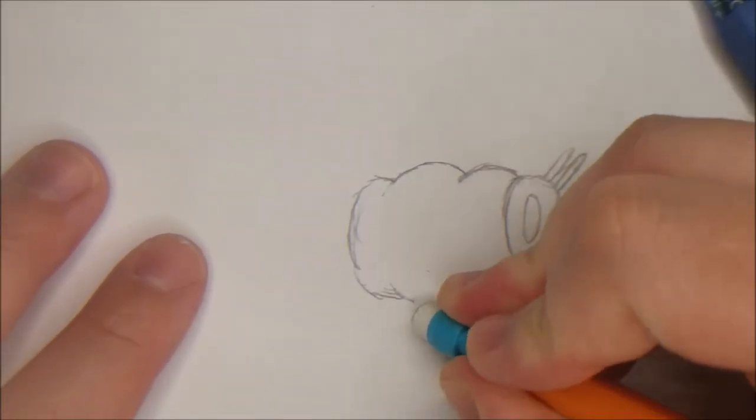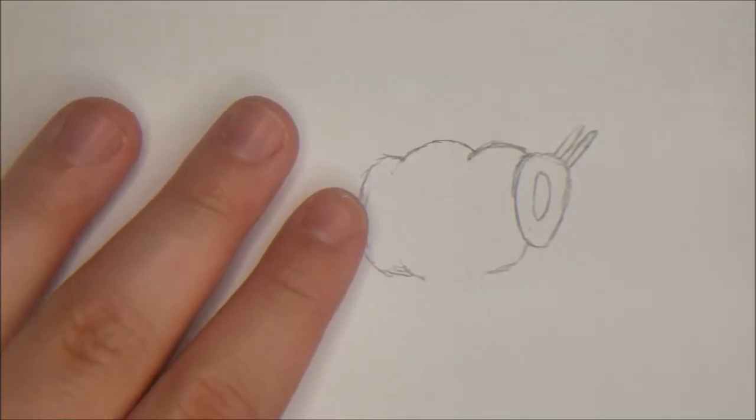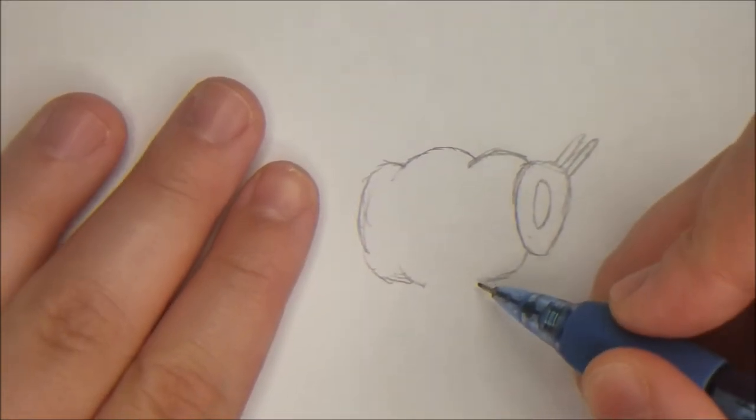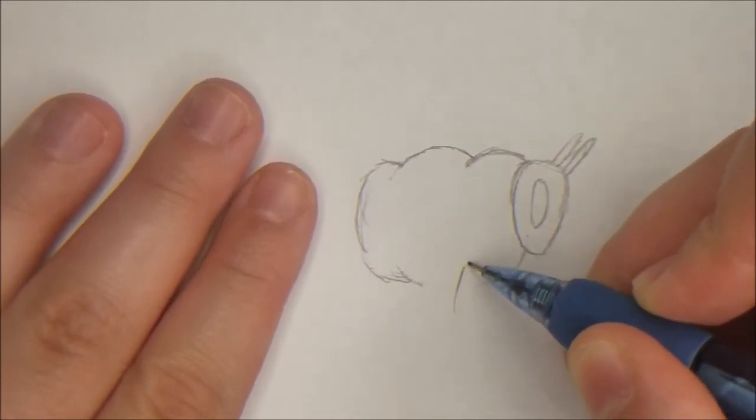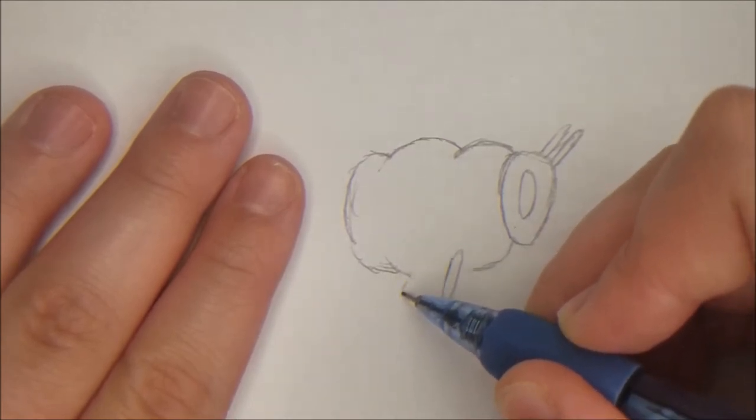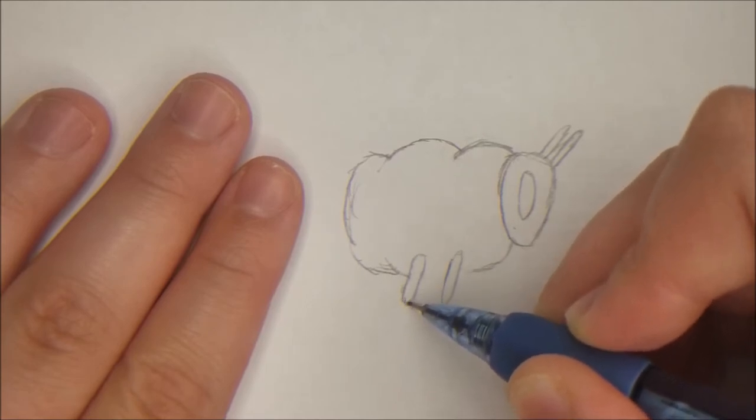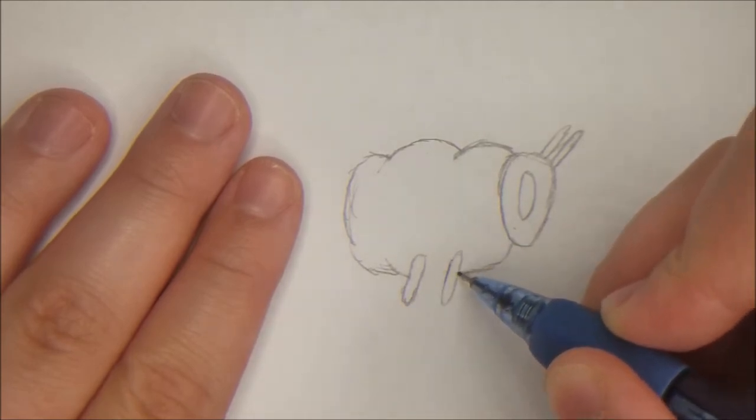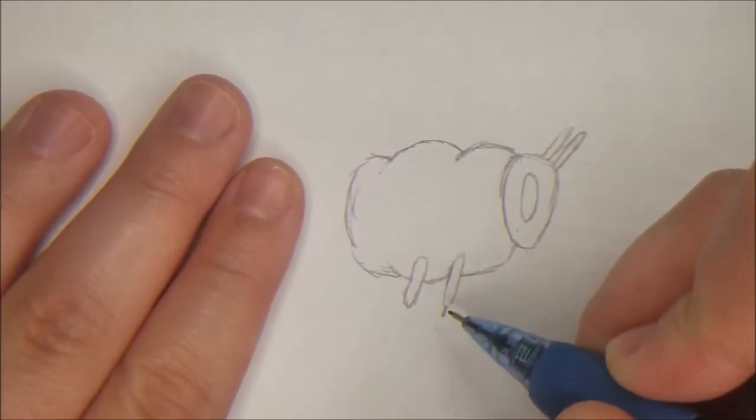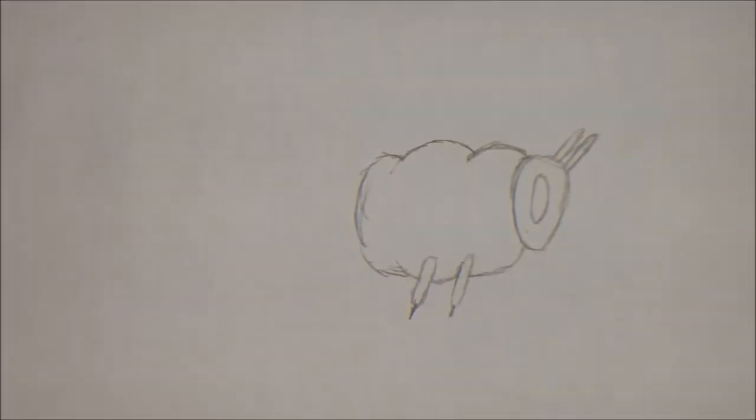Then, once you get that, you're going to want to make his tiny legs. So, they're just little tube-like deals. And then, you're going to bring that back. And then, make these little feetsies. You are almost done.